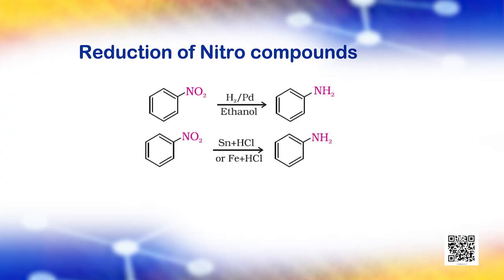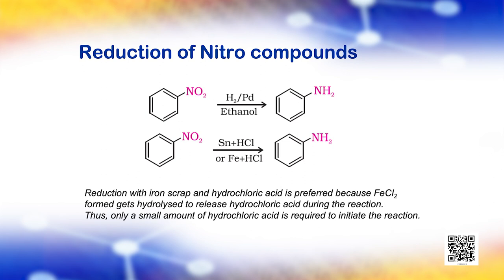Nitro compounds are reduced to amines by passing hydrogen gas in the presence of finely divided nickel, palladium or platinum, and also by reduction with metals in acidic medium. Reduction with iron scrap and hydrochloric acid is preferred because FeCl2 gets hydrolyzed to release hydrochloric acid during the reaction. Thus, only a small amount of hydrochloric acid is required to initiate the reaction.